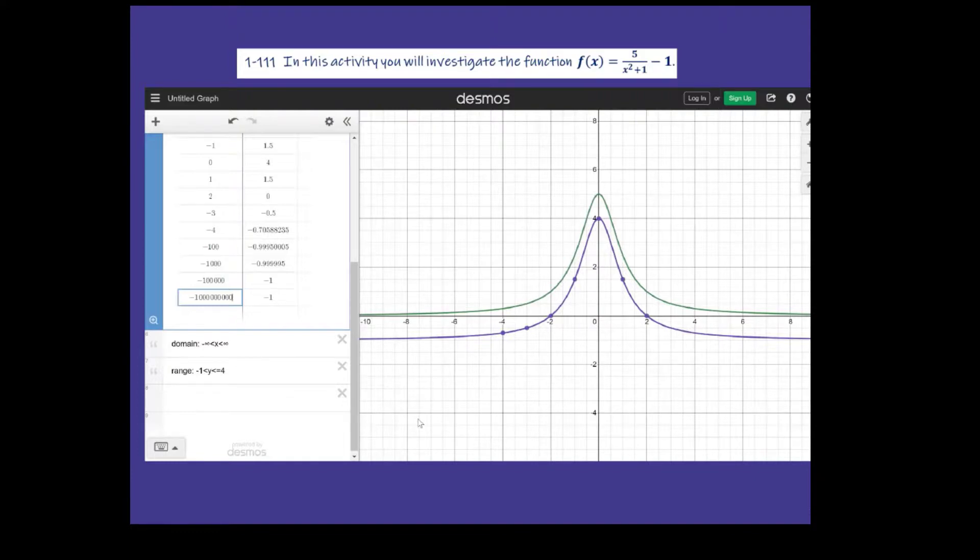Okay, so to summarize this function and really the entire lesson, because this was the only problem on it, some summary statements on this one. One of them could be our domain is all real numbers. And part of the reason for that is our x squared plus 1 that we have in our original equation in the denominator will never evaluate to 0. So we have no asymptotes here. If that 1 was not there, then yes, we would have 0 as an asymptote.